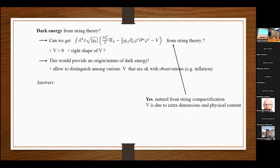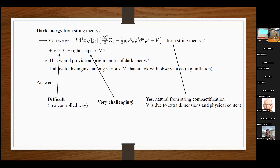Getting a four-dimensional theory with a scalar potential from a string compactification is very natural. The scalar potential is just due to the extra dimensions; its shape is fixed by the physical content in the extra dimensions. However, getting a positive potential and in addition with the right shape — very flat — is a very challenging point, especially if we want to do this in a well-motivated, well-controlled way. This is the topic of the talk.